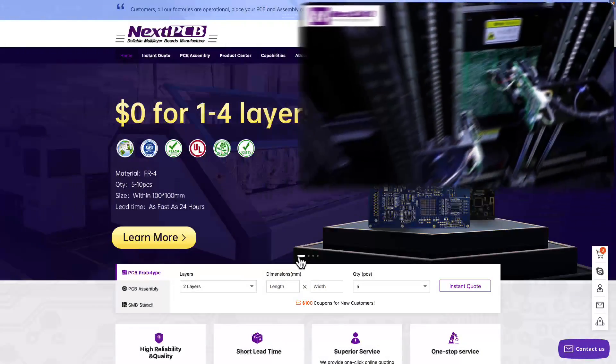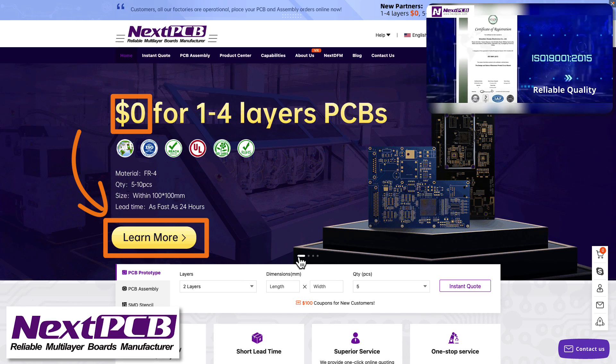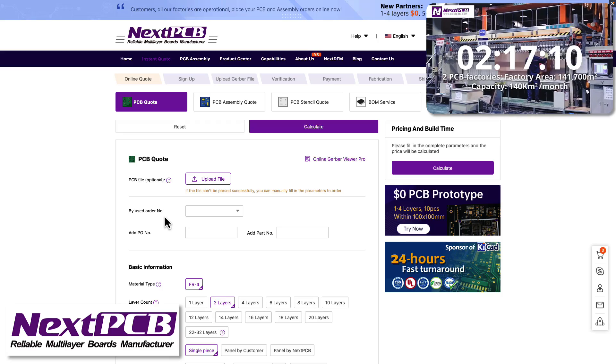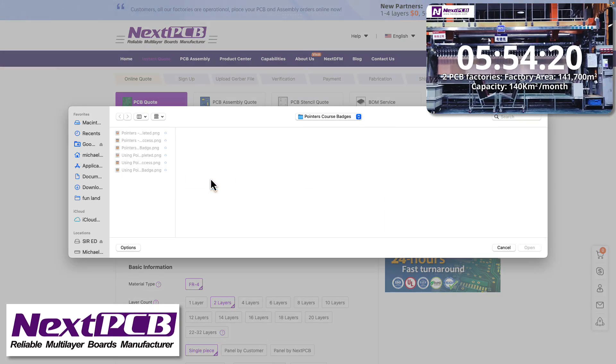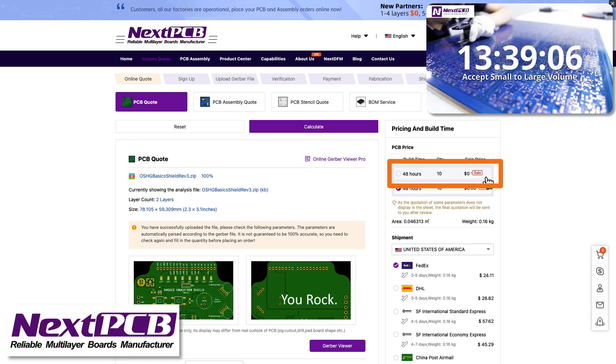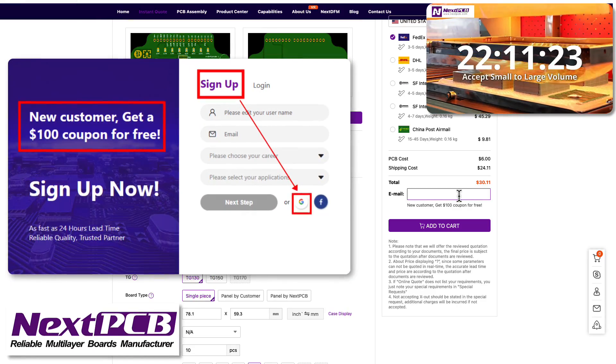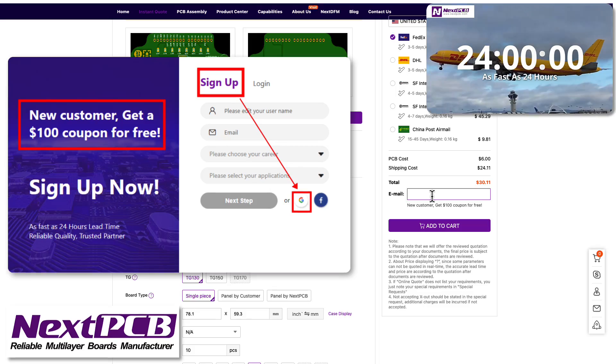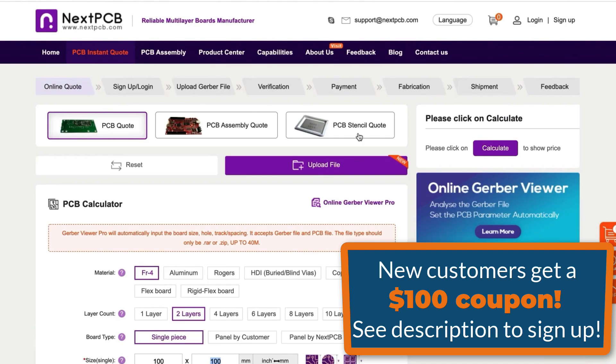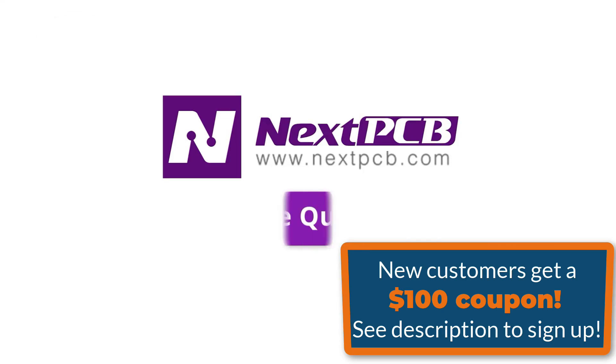This video is sponsored by NextPCB. With NextPCB, you can get a totally free PCB prototype. That means for $0, you can get a 1-4 layer PCB. It's simple to get an instant quote, just upload your Gerber file. That's $0 for 5-10 PCB prototypes. In addition, when you sign up, new customers will get a $100 coupon for free. Check the link in the description for NextPCB to grab this great offer.